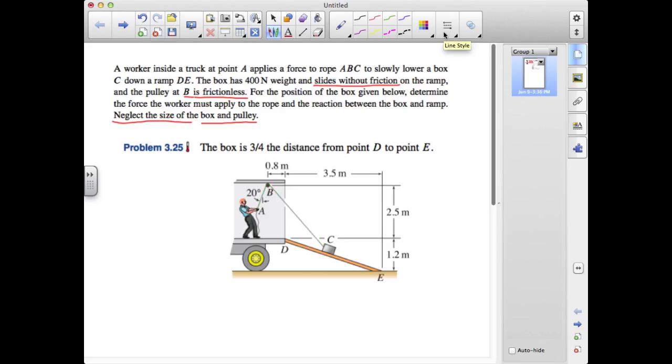Now before we begin, we can talk about the merits of choosing to isolate different components of this system to solve for what's requested. We're asked to find the force the worker must apply to the rope and the reaction between the box and the ramp. The fact that we're asked to find the reaction between the box and the ramp suggests that we probably want to isolate the box, and so we're going to be drawing an enveloping surface around the box at C.